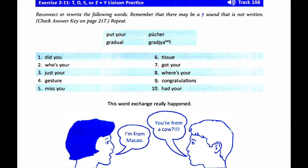Exercise 2-11: T, D, S, or Z plus Y liaison practice. Reconnect or rewrite the following words. Remember that there may be a Y sound that's not written. Repeat. Putcher, gradual.